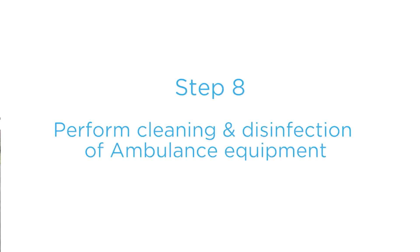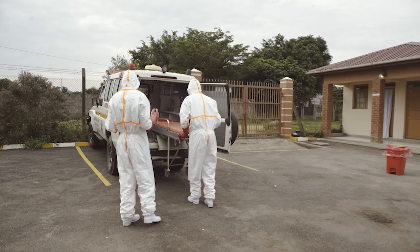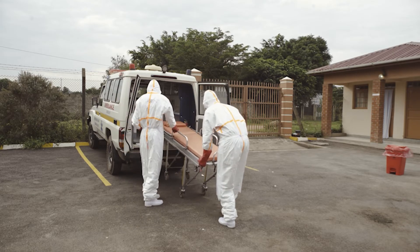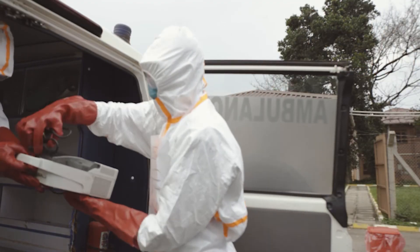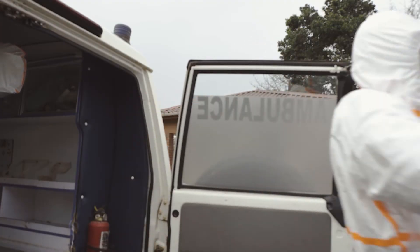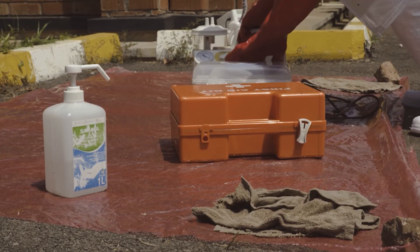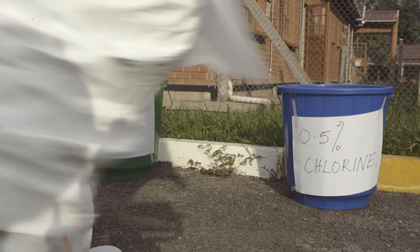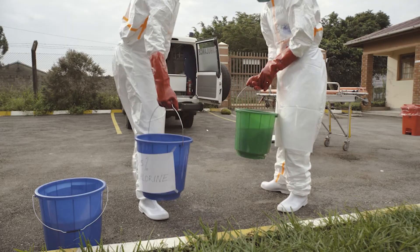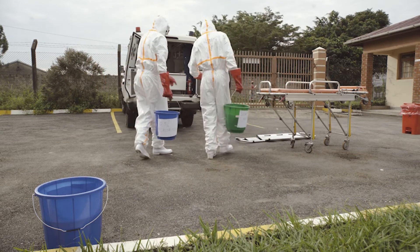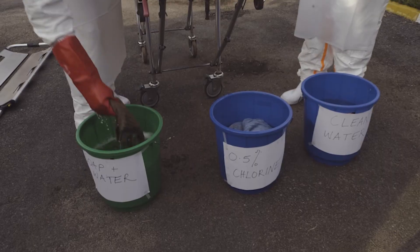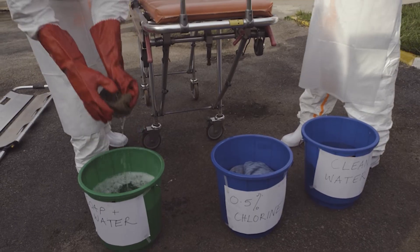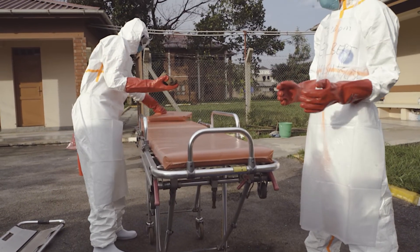Step eight: perform cleaning and disinfection of ambulance equipment. Remove the ambulance trolley and place it outside in the area where you will perform its decontamination process. Remove other ambulance equipment and place it on a plastic sheet outside the ambulance where equipment decontamination will be performed. Clean all the ambulance equipment following the standard operating procedure prepared for ambulance equipment decontamination.